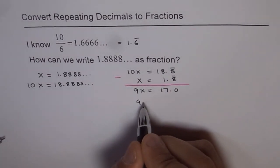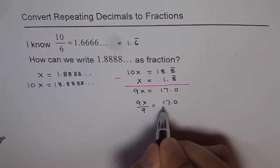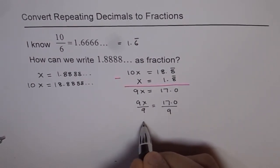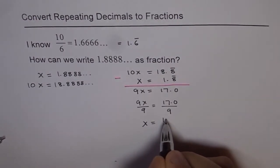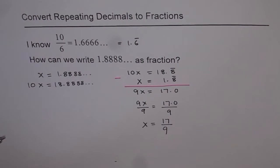Now I can divide by 9 on both sides. So I get x equals 17 over 9. That is the fraction which is going to give us 1.8888. So that becomes our answer.